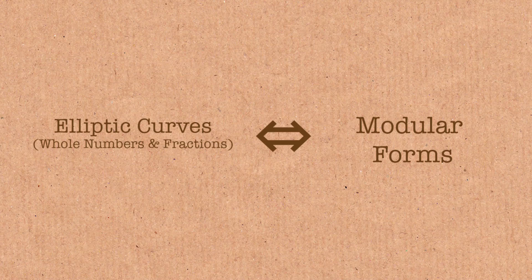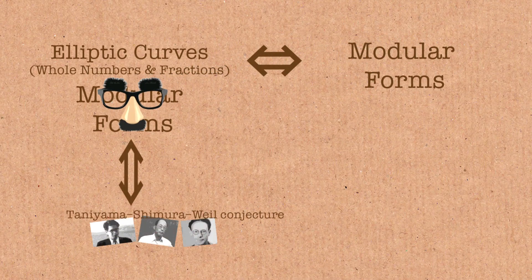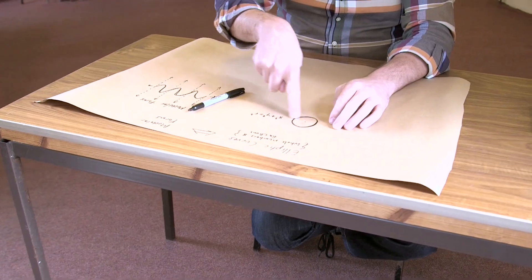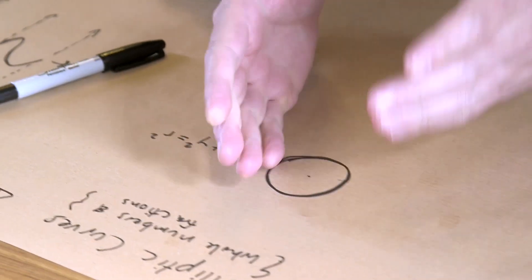It says that this really strange function over here can fit inside this really dull function over here. And when this was proposed, no one believed it. No one believed you could stick this coil into the circle. The reason was because no one could visualize it so nicely - these are completely different spaces. That's the connection that needed to happen to make Fermat's Last Theorem work. I'm trying to give you a feeling for what's going on.